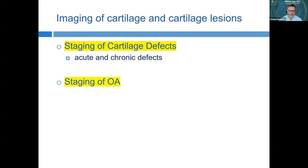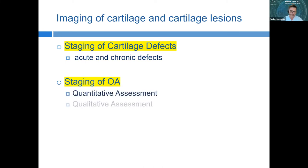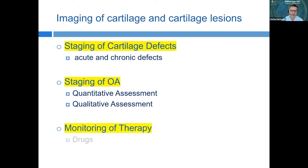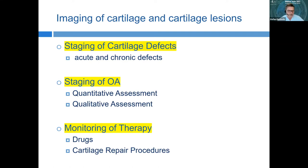Imaging is also very important for the staging of osteoarthritis. We have different operative and non-operative treatment options for OA, and we need a staging protocol — which can be delivered by MRI, providing both quantitative and qualitative assessment. We also want imaging to monitor therapies, as new drugs for cartilage repair and regeneration are being developed, and MRI is a non-invasive way to monitor them.